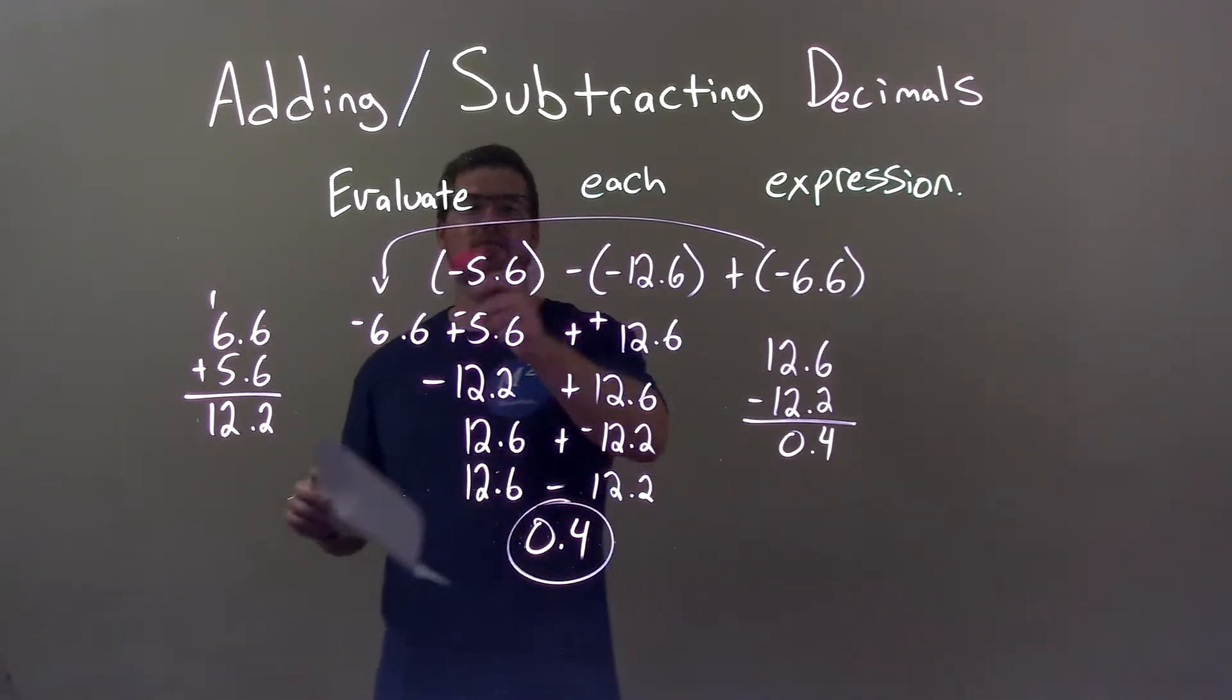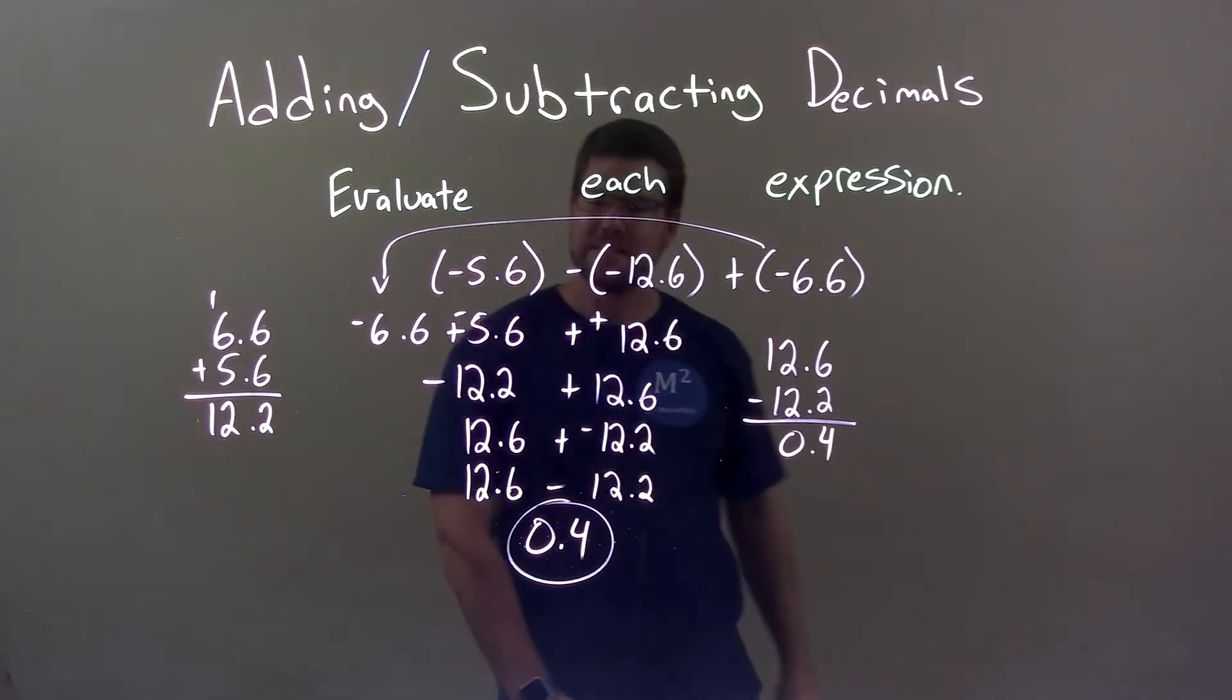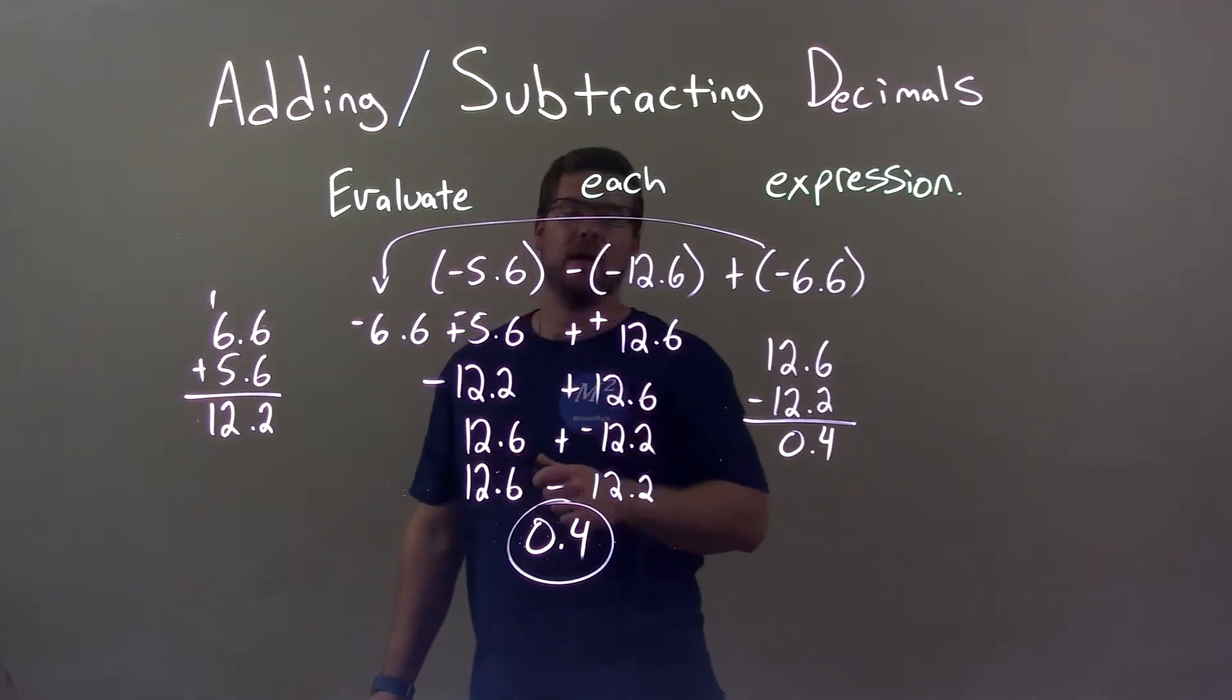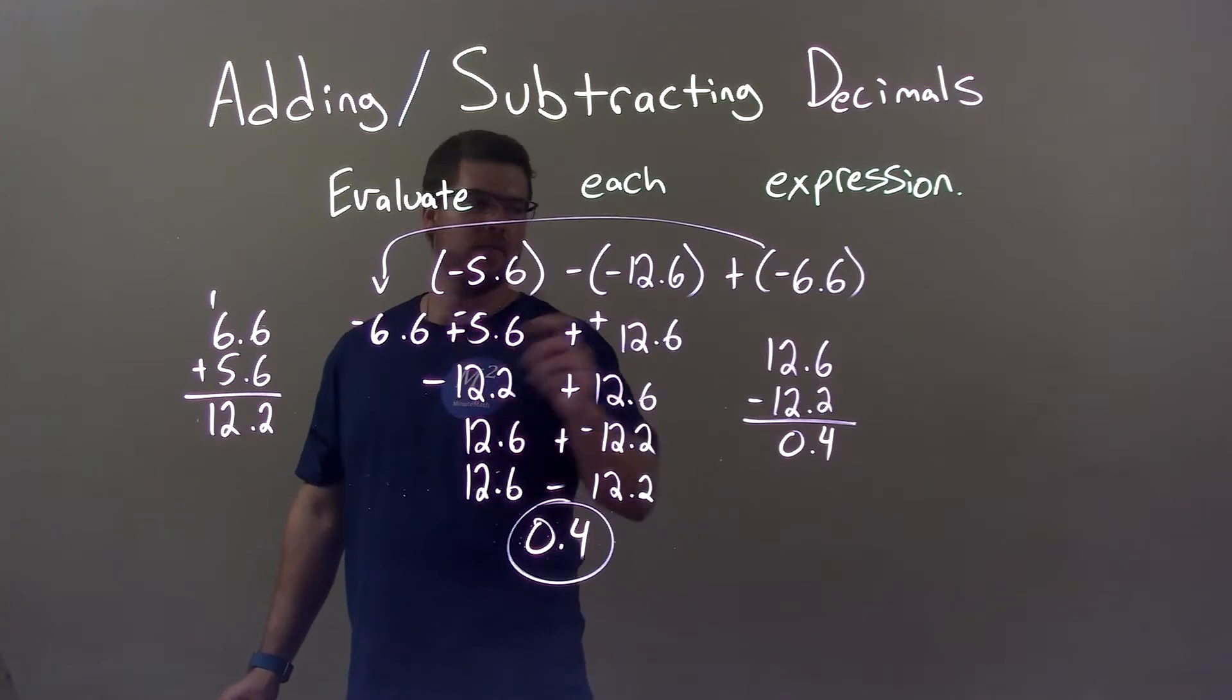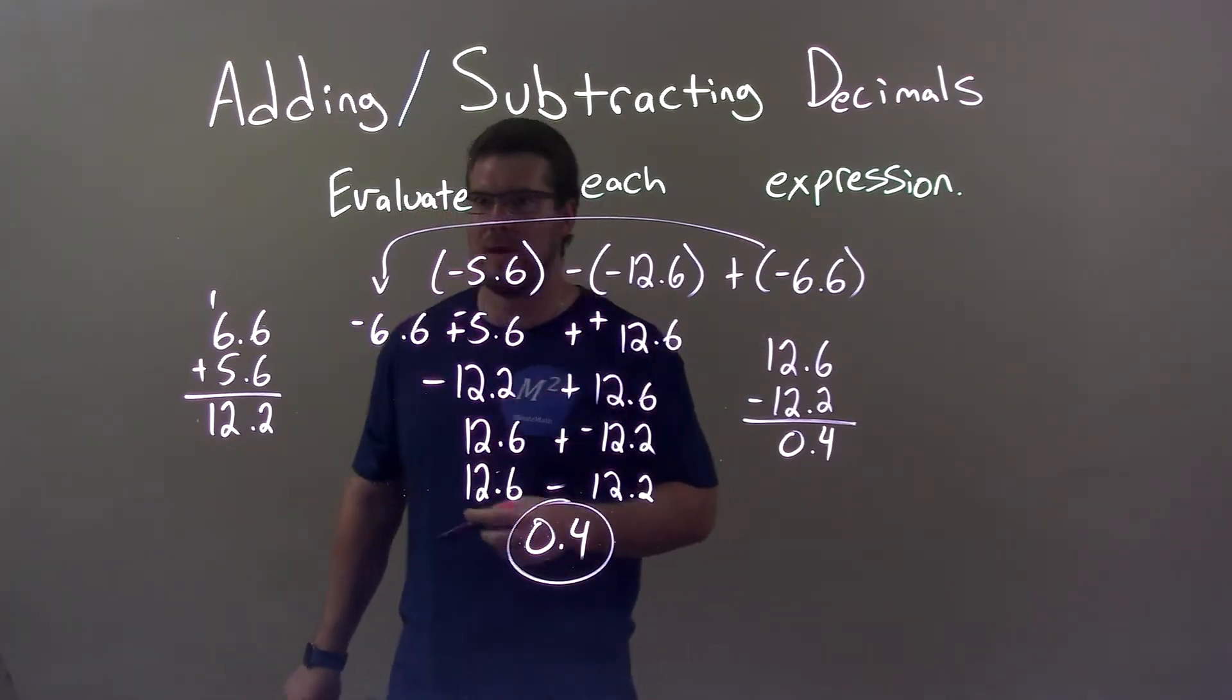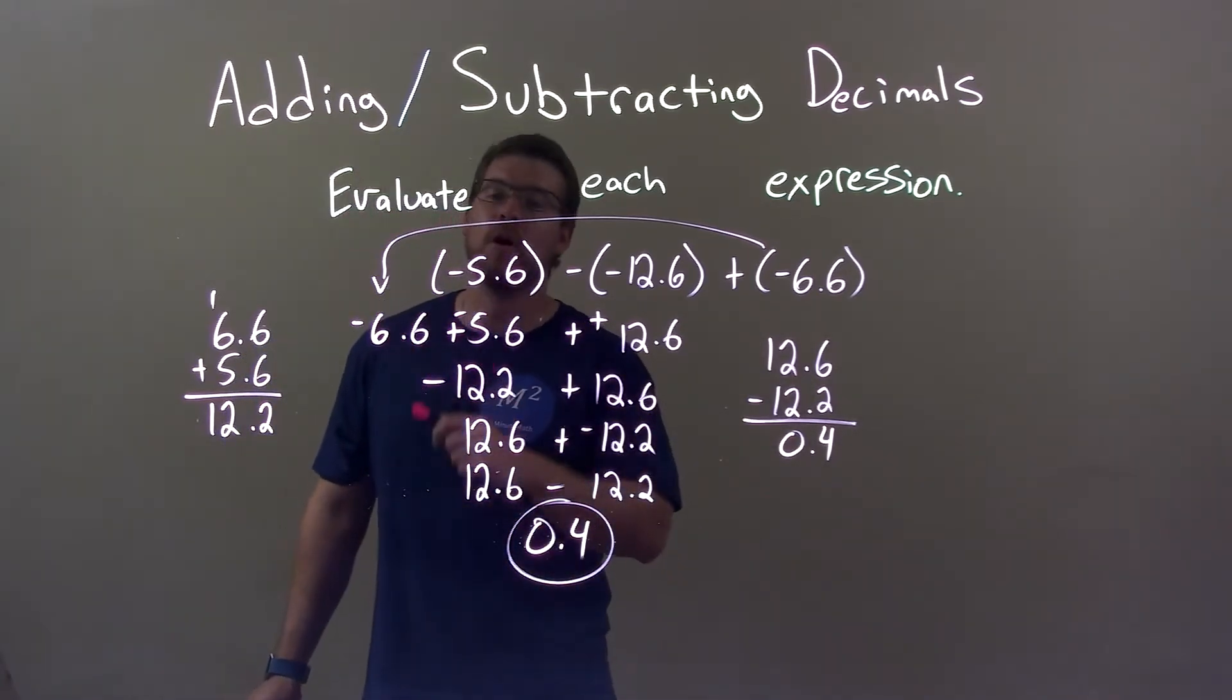So quick recap, we're doing a negative 5.6 minus a negative 12.6 plus a negative 6 right there. Well, what I did, I knew subtracting a negative, same thing as adding a positive. And I made this subtraction, add a negative, brought this negative over here, because my negatives I wanted to group. That's the way I like to do it. Combine these two negative numbers, negative 6.6 plus a negative 5.6, and got a negative 12.12.